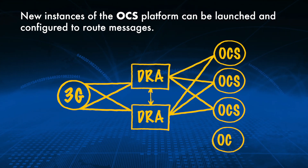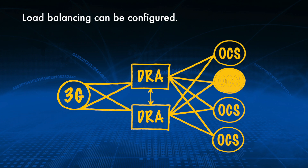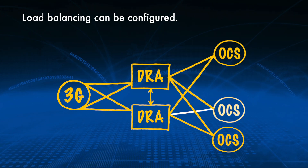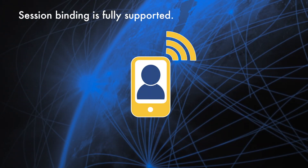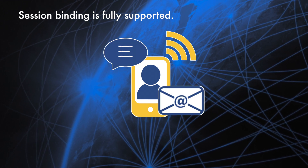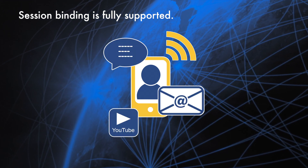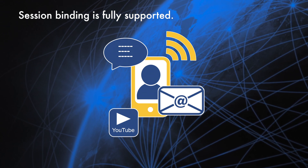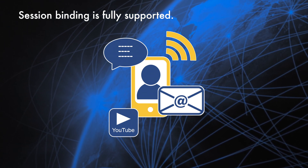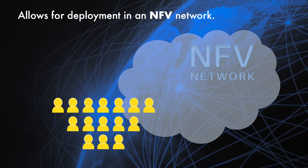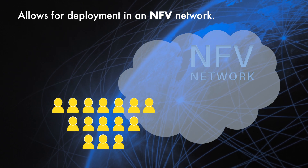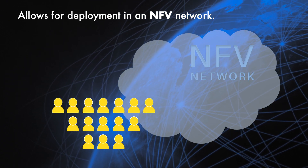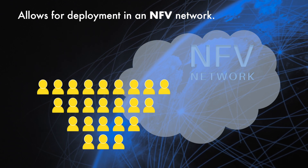Sophisticated load balancing can be configured so that, for example, if OCS version 1 is congested, then the DRA will automatically route to the next available OCS. Full support for session binding ensures correct online credit control is being performed when multiple simultaneous services are being billed for a single subscriber. This model allows for ease of deployment in a cloud-based NFV network, allowing OCS resources to be easily deployed or removed as network demand dictates.